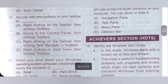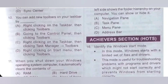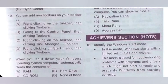Question 10: You can add a new toolbar on your desktop by: Option A: Right clicking on the taskbar, then clicking toolbar. Option B: Going to the control panel, then clicking toolbar. Option C: Right clicking on the taskbar, then clicking task manager toolbar. Option D: Right clicking on the start menu, then clicking toolbar. So you can add a new toolbar by right clicking on the taskbar, then clicking toolbar. Option A is the correct answer.